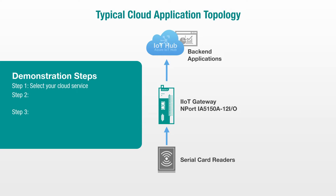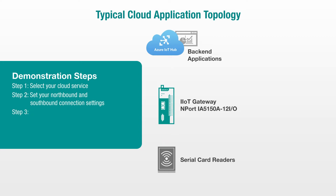There are three key steps to connecting your field data to the cloud. Step one: select your cloud service — in this demo we will use Microsoft Azure IoT Hub as an example. Step two: set your northbound and southbound connection settings to register your NPort with your IoT Hub and determine the proper serial data packing method to transmit your data.